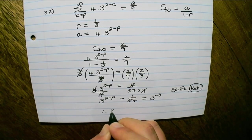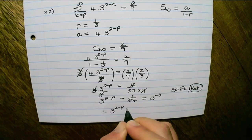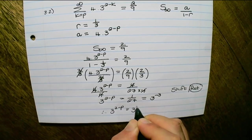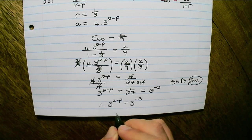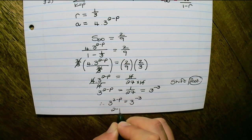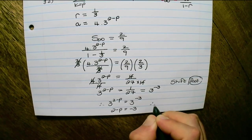Therefore, we have 3 to the power of 2 minus p equals 3 to the power of minus 3. And from there, I can simply solve for p. So 2 minus p equals negative 3. Therefore, p would be equal to 5.